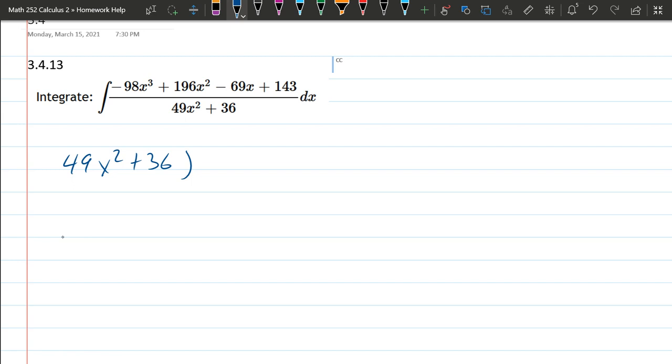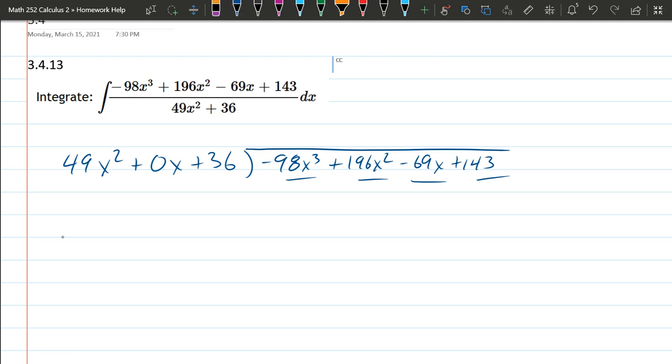I'm a little bit scared because we have some big coefficients. There's no x term here, so I'm going to put in 0x as a placeholder. So we have negative 98x cubed plus 196x squared minus 69x plus 143. You cannot use synthetic division if you have a square term or anything higher than a linear term. So synthetic division is not going to help us here. We've got to go long division.